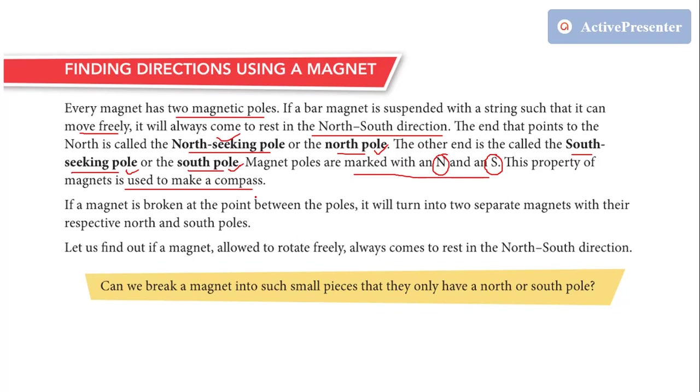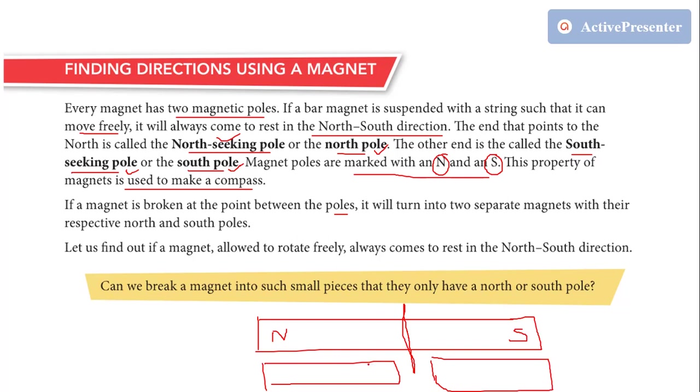But the question arises, if a magnet is broken at the point between the poles, will it turn into two separate magnets or not? Suppose this is a full magnet with north pole here and south pole here. If we break this magnet like this, it will divide into two separate magnets. Will these two magnets be separate or will the magnetism be lost?